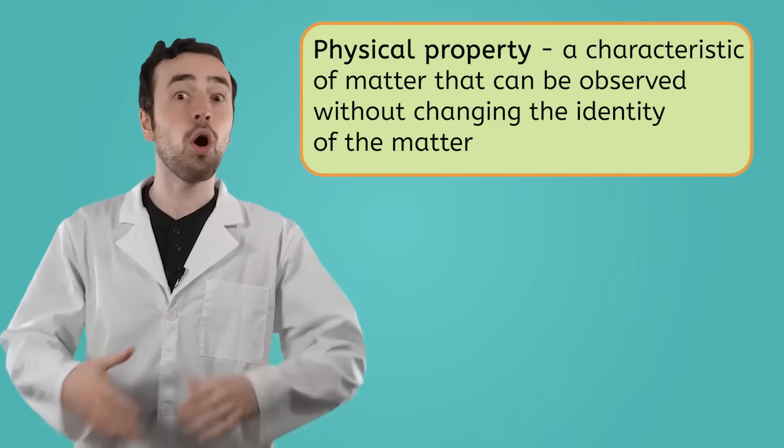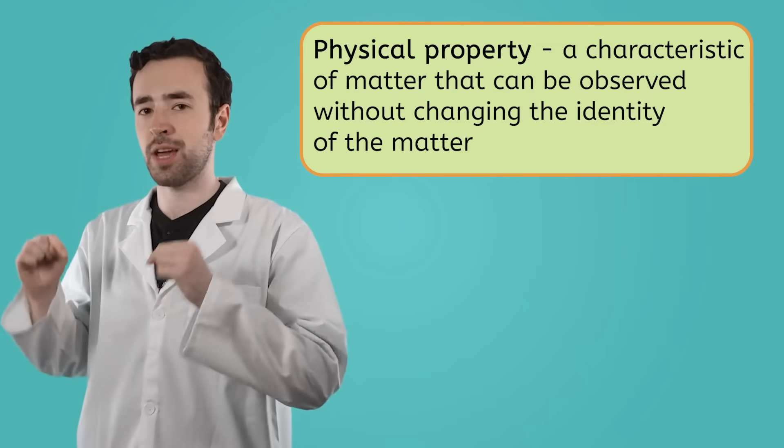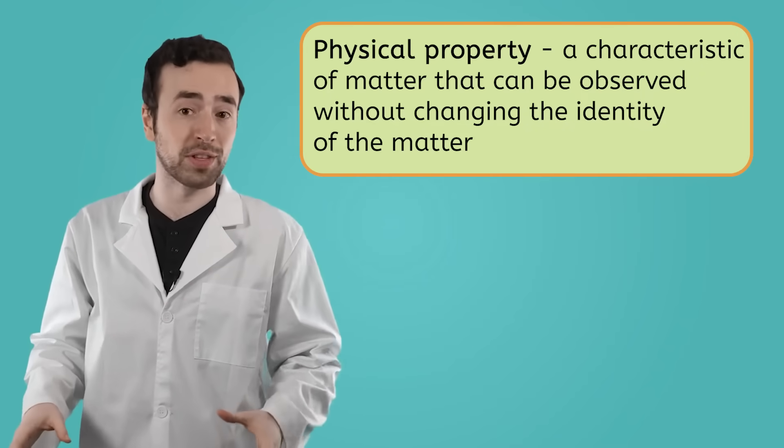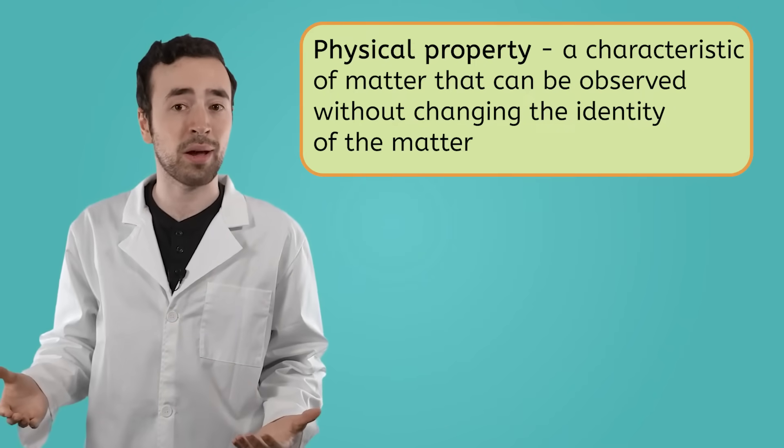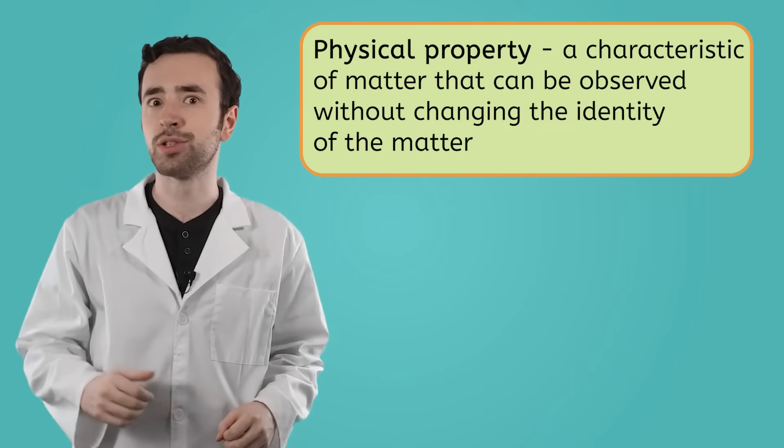So the physical properties of matter are all the properties that we can observe without changing what the identity of the matter is. And trust me, there are tons more physical properties that we just haven't talked about. But what happens when the matter we're observing does change?